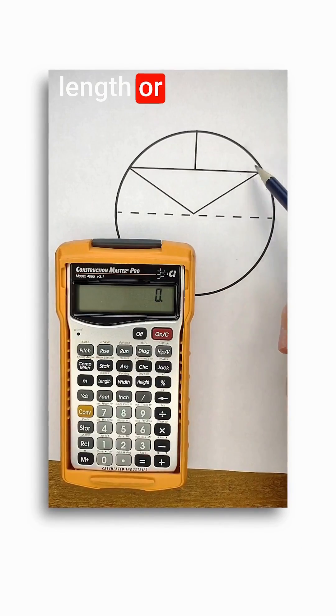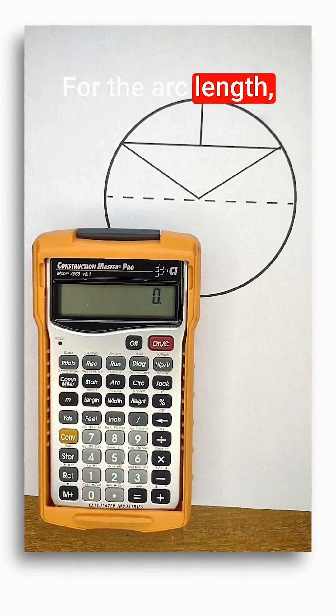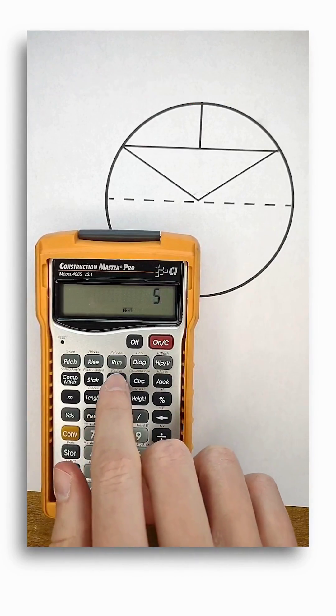First, you could tell it the arc length or the angle measurement formed by the central angle. For the arc length, you just have to enter a unit of length. Here I'll do five feet and then push the arc button.